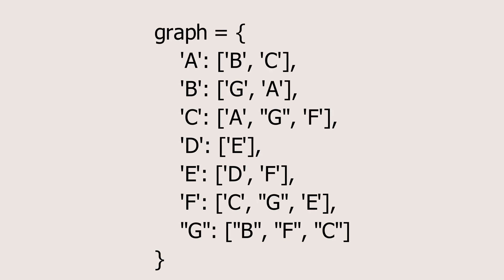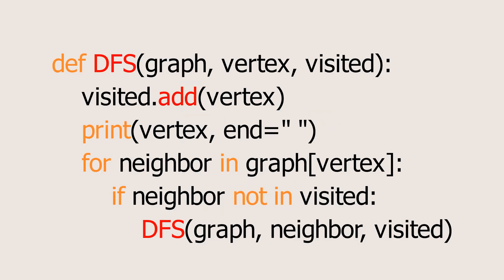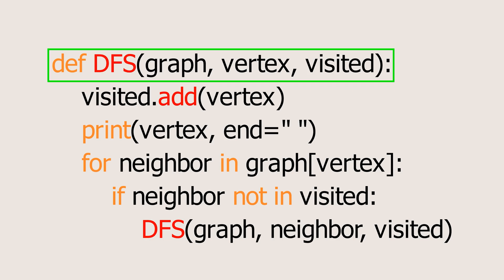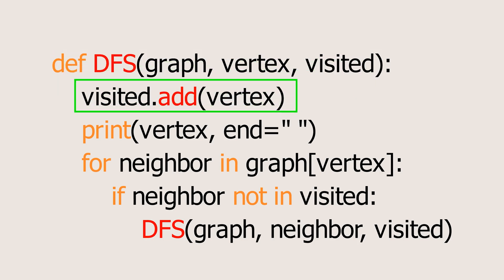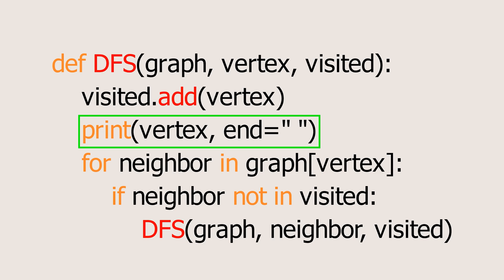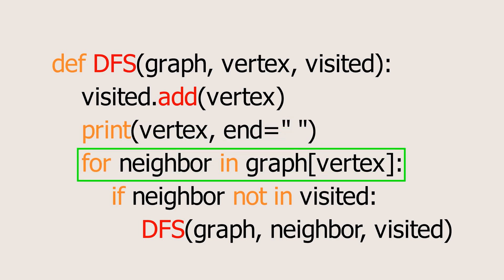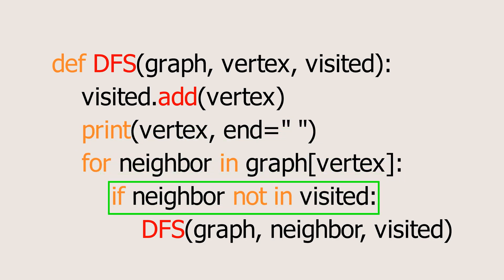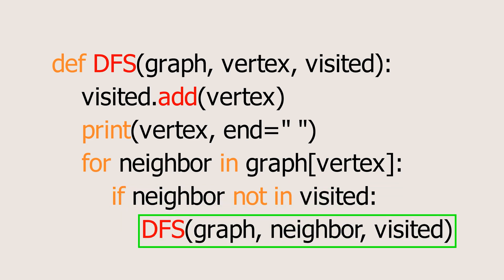Now let's take a look at the code for this recursive version of DFS. First, we'll store the graph as an adjacency list using a dictionary where each node points to a list of its neighbors. Next, we'll define the DFS function, which takes three input parameters: the graph, the starting vertex, and a set called visited to keep track of nodes we've already visited. In this function, we add the current vertex to the visited set and print it to show our progress. Then, for each neighbor of the current vertex, we check if it's already visited. If it's unvisited, we recursively call DFS on that neighbor, continuing our deep exploration.